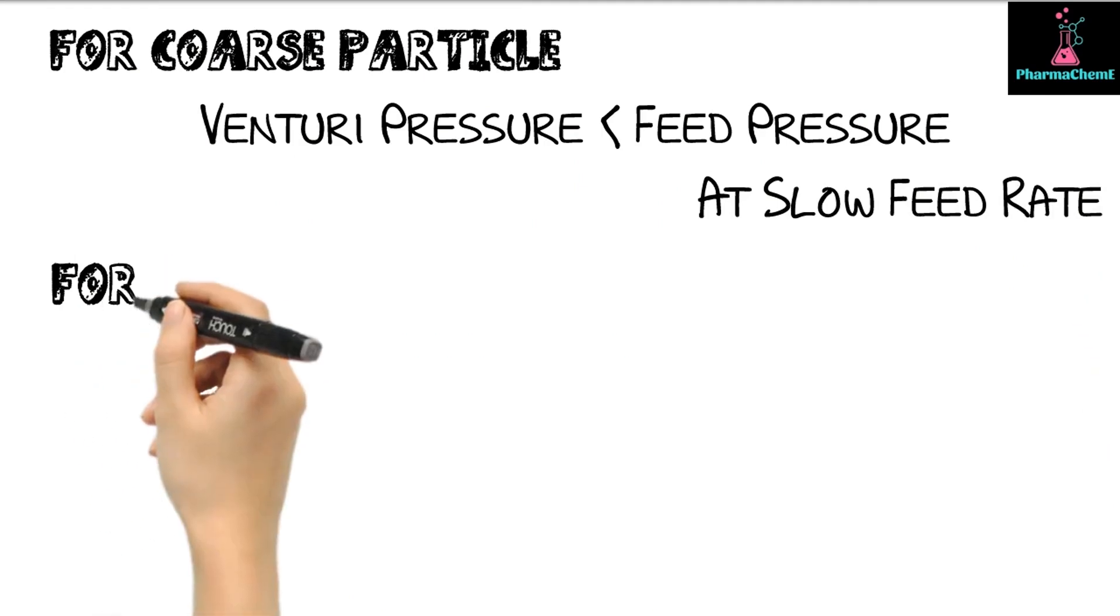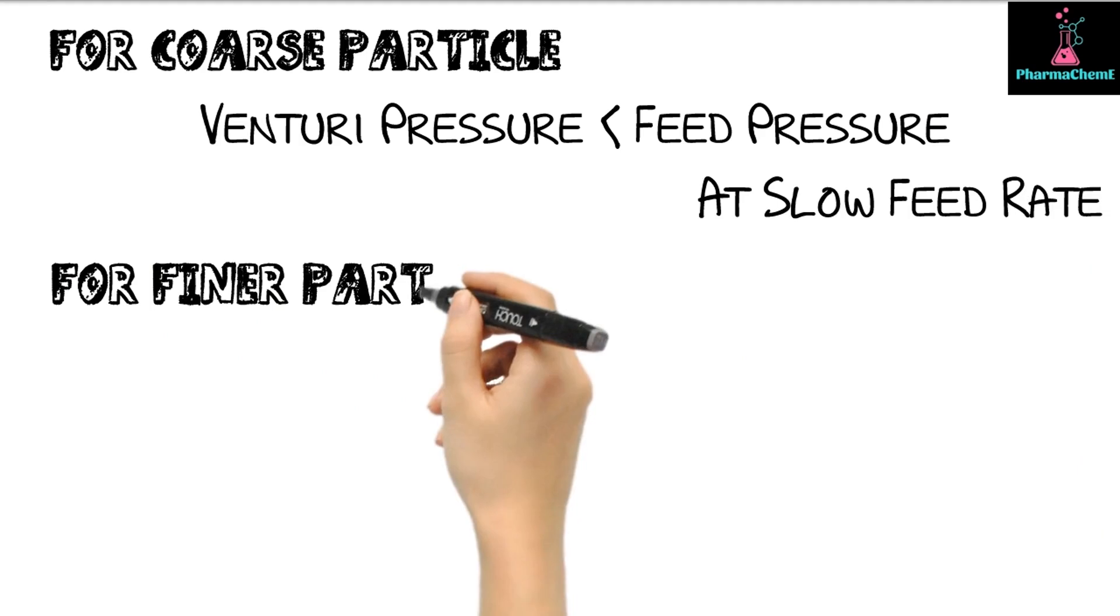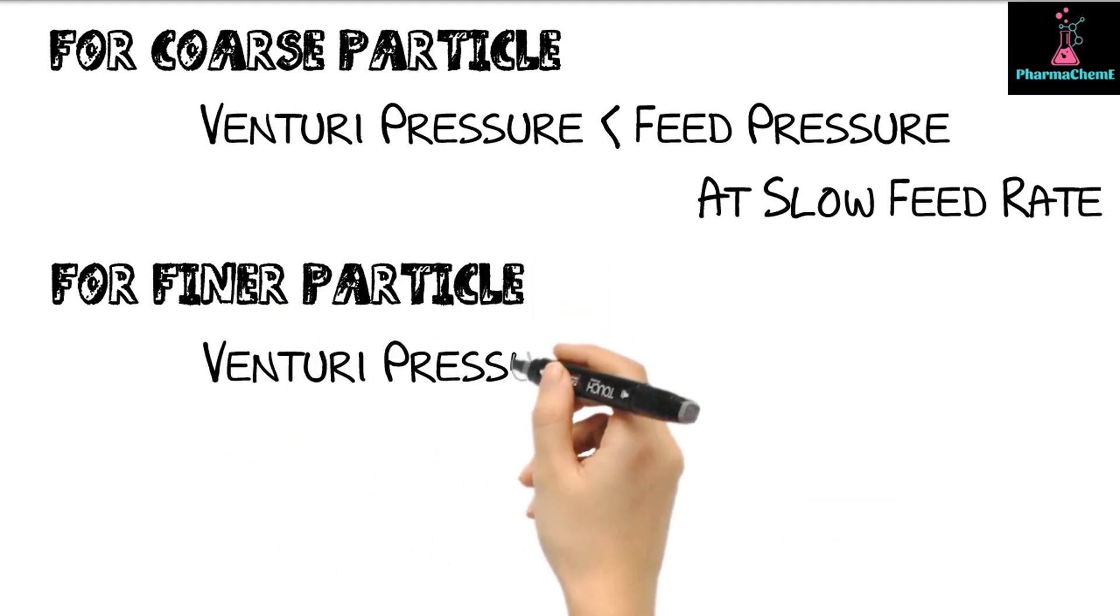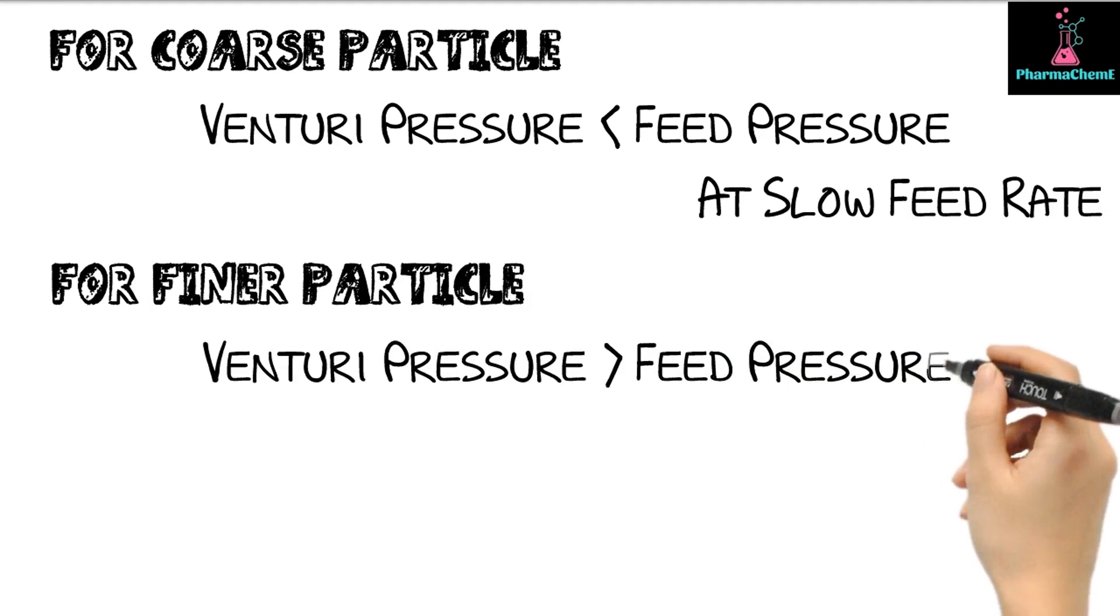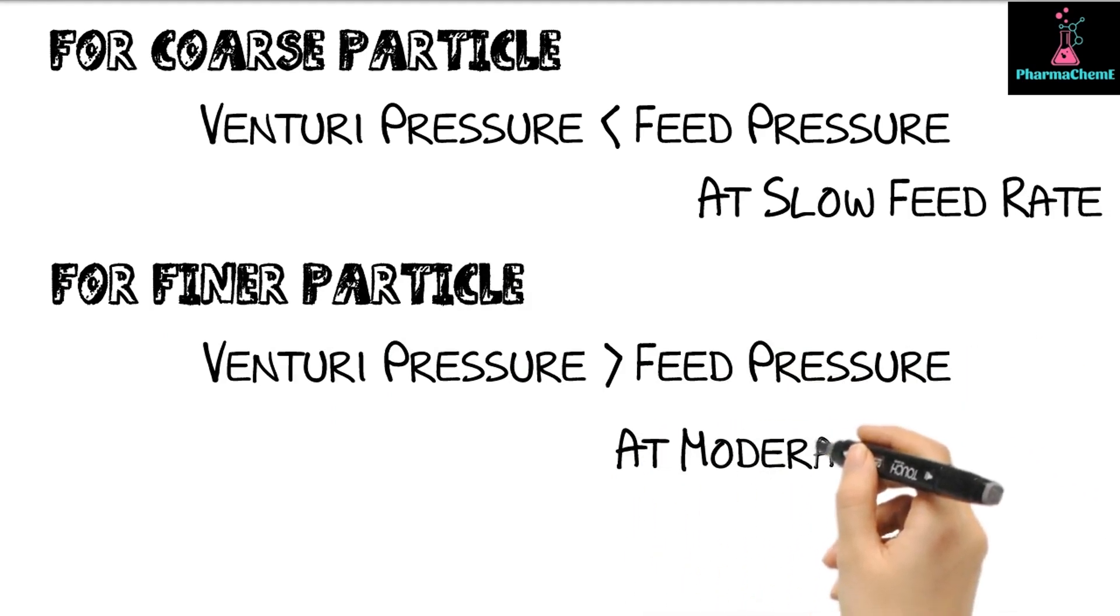Conversely, for finer particles, increasing the venturi pressure and adopting a moderate feed rate creates a stronger air jet, promoting vigorous particle collisions and enabling finer grinding.